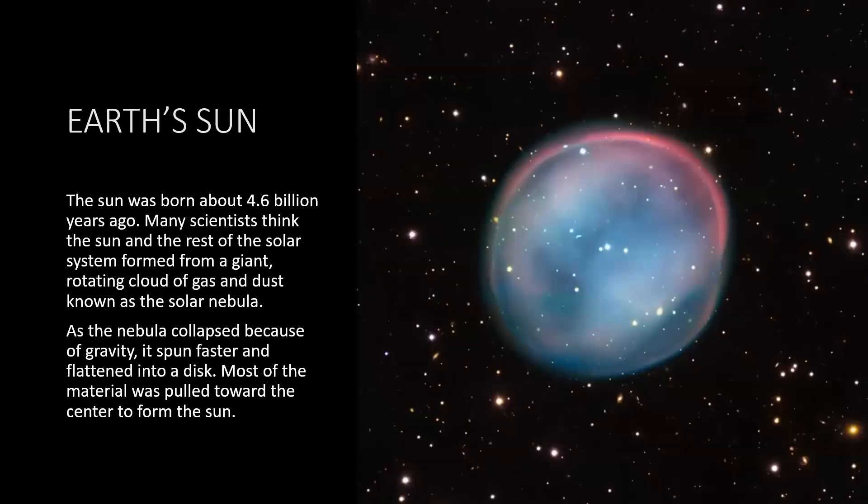The Sun itself was born about 4.6 billion years ago. Many scientists think the Sun and the rest of the solar system formed from a giant rotating cloud of gas and dust known as the solar nebula. As the nebula collapsed because of gravity, it spun faster and faster and flattened into a disk. Most of the material was pulled towards the center to form the Sun.